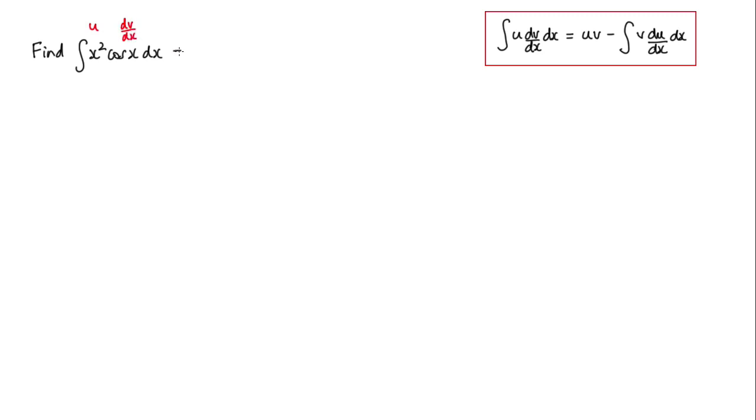So applying the rule, we have u times v. We'll use x squared and v, well we need to integrate cos x and that will be sine x. I'm going to subtract the integral of the v term which is sine x.